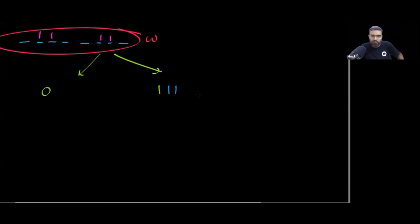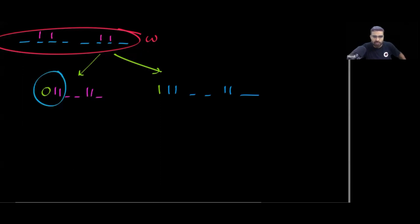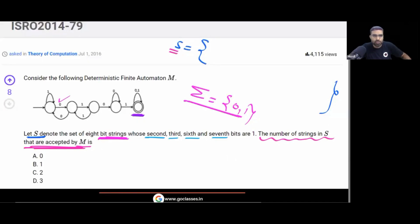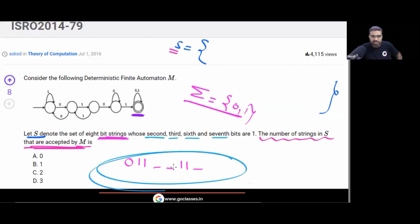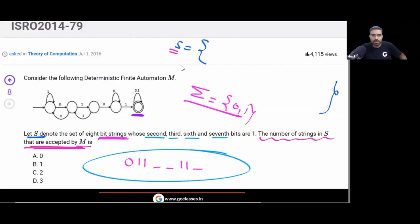If the first position is 0, we are looking for strings of the form 0, 1, 1, ?, ?, 1, 1, ?. Let's check: starting from the initial state, if you read 0 you go here, then read 1 you go here, then read 1 you go here. So at this point you are in a particular state.